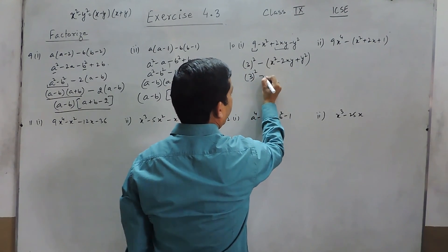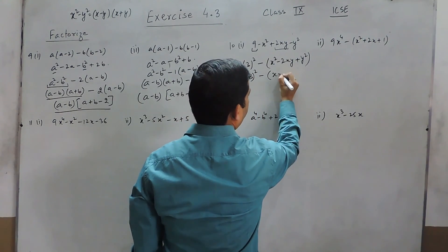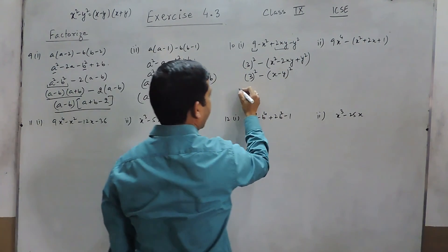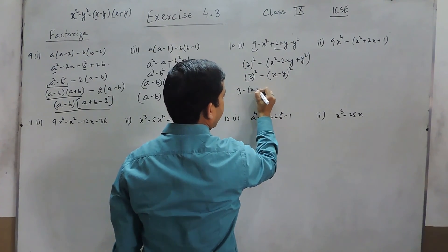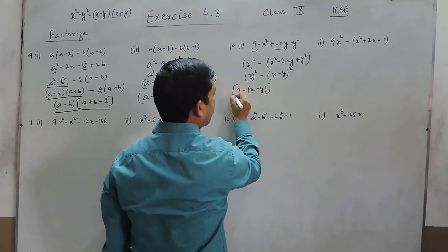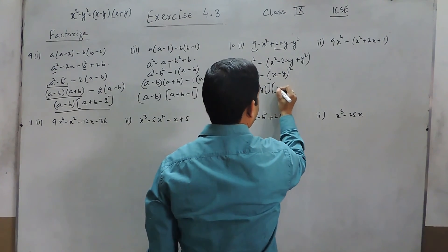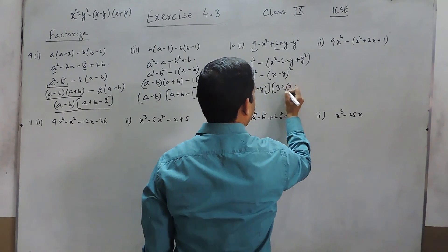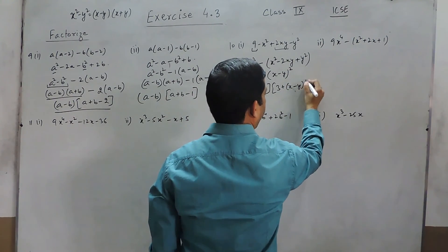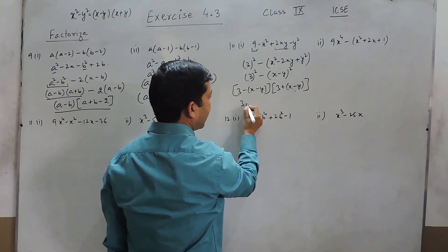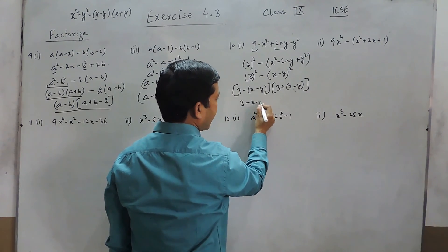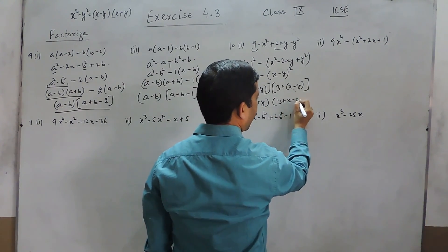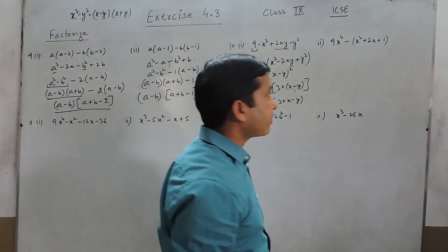And this is also a perfect square. So this is 3 whole squared minus x minus y whole squared. Again we use the same identity: this is 3 minus (x minus y) in the first bracket and 3 plus (x minus y) as the second bracket. So this gives 3 minus x plus y as the first factor and 3 plus x minus y as the second factor.